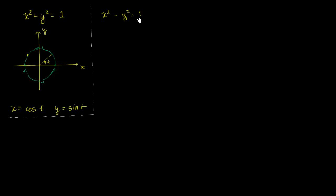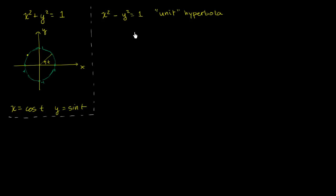Now let's think about the unit hyperbola. x squared plus y squared equals 1 is a unit circle. Well, I'll say that x squared minus y squared equals 1, and I'm just going to call this my unit hyperbola, or unit rectangular hyperbola. This is just a little bit of a review from conic sections. So that's my y-axis, this is my x-axis. If y is 0, x could be positive or negative 1 — that's where it intersects the x-axis.